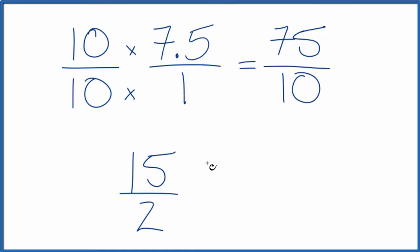This is an improper fraction. We could convert this to a mixed fraction because 2 goes into 15 7 times with 1 left over, so we call it 1 half. So 7 and 1 half.